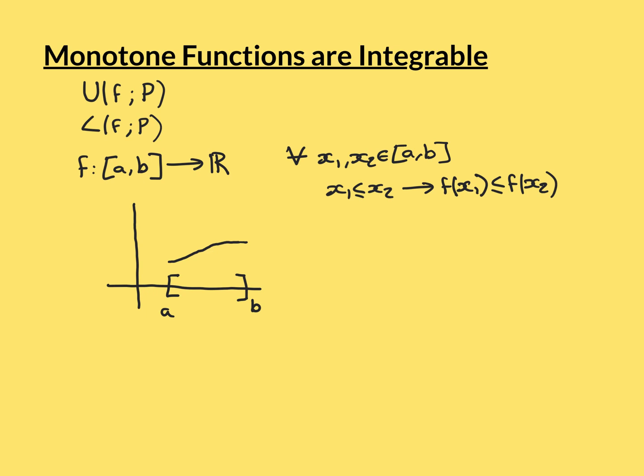And then here again it seems to level off and stay the same. But at no point does it go down. This picture isn't supposed to show it going down anywhere. It's supposed to show it just levelling off and staying the same there. So that's pictorially what a monotonically increasing function means: as you go along in the domain, you either stay the same or go up, but you never go down.